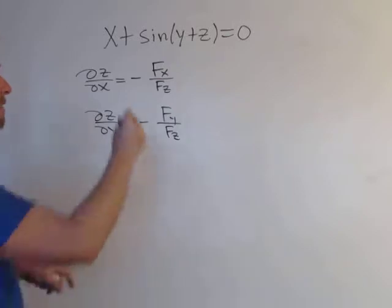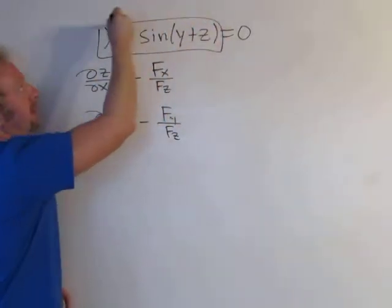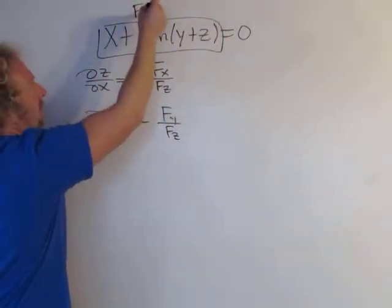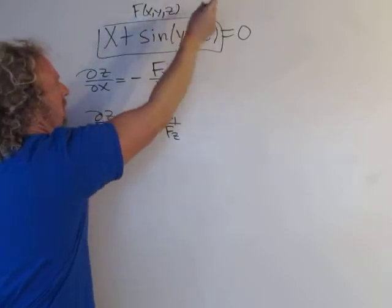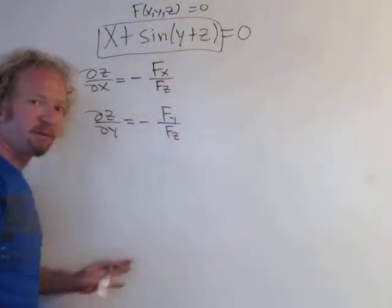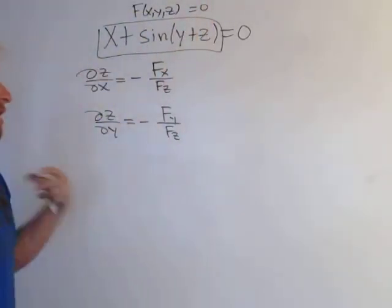Now what is big F? Well, big F is this entire creature right here: F(x, y, z). Notice it's equal to zero. That's a requirement before you use the formula—you always have to set it equal to zero.